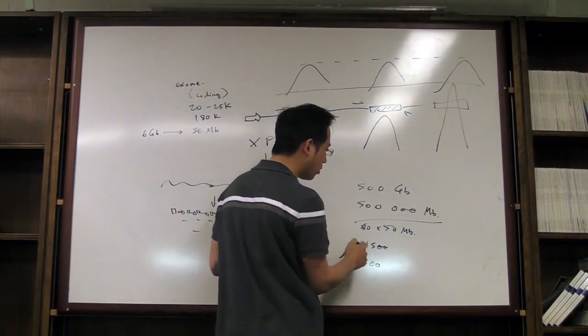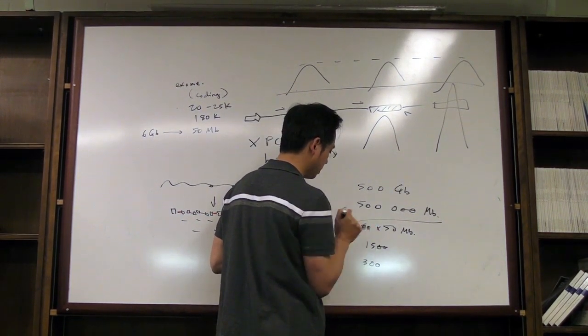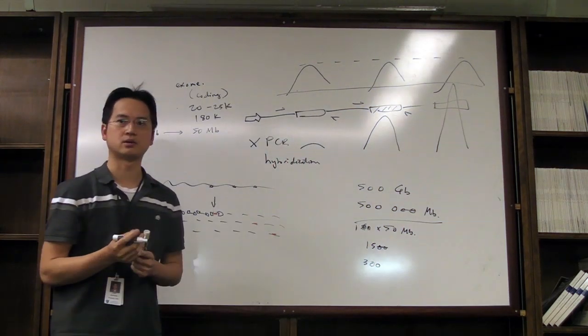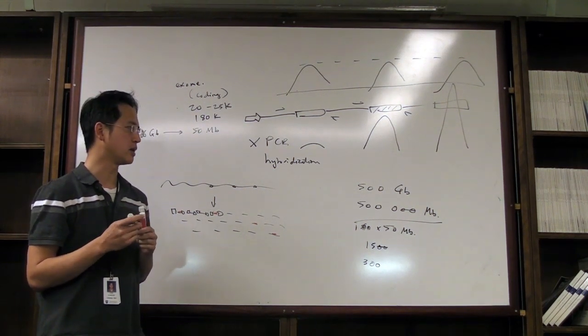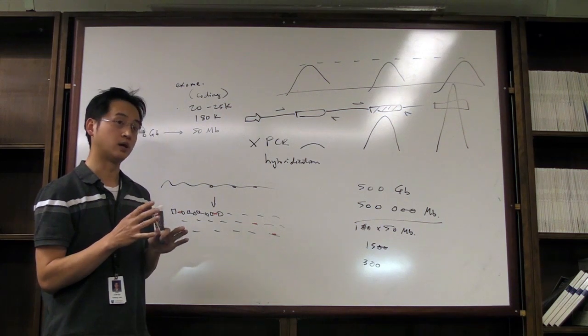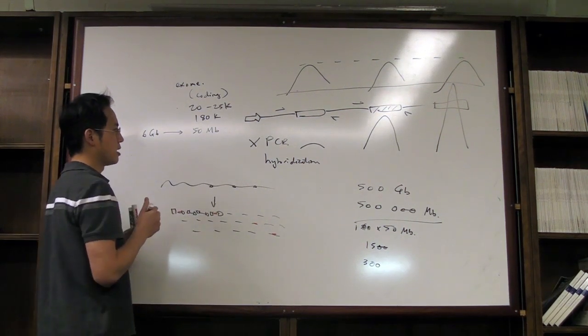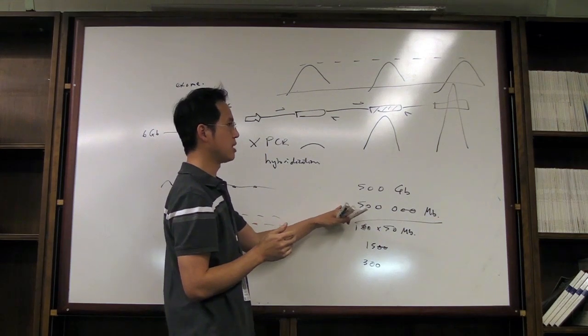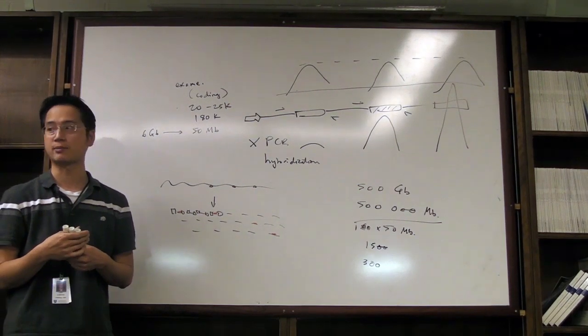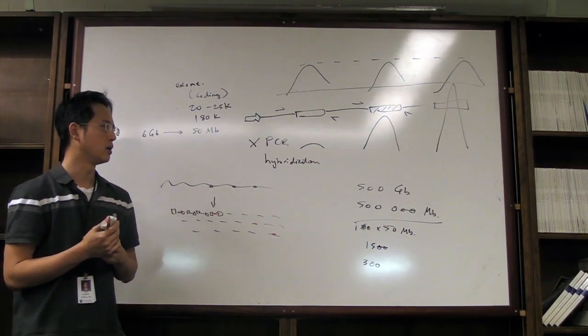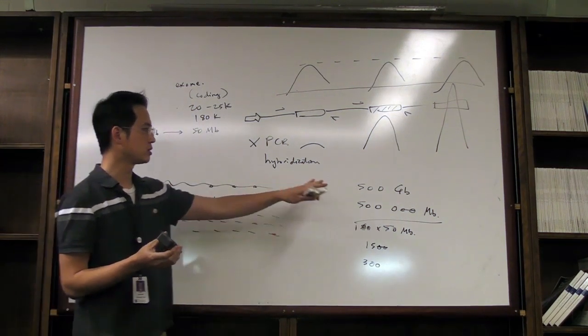So let's do that HiSeq run again. The HiSeq 2000 run will give you, let's just say right now it's good at 500 gigabases. That's 500,000 megabases. And so what is this? I think I need to multiply this times 30, I still want 30-fold X coverage to get the heterozygous mutations that I'm calling. This is 1500. You guys can help me with the math here. This will be about 300. You can do about 300 cases. That's pretty good. So I can probably do 300 patients in one HiSeq run.